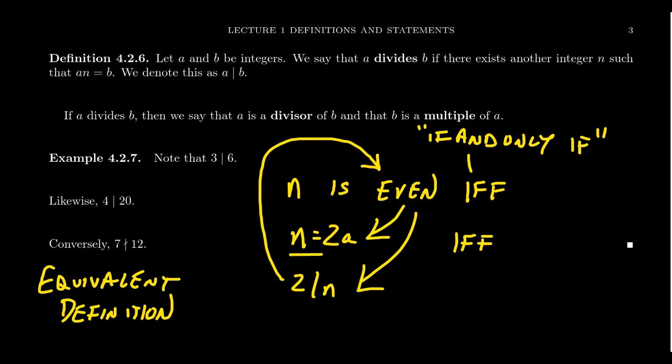This gives us an example of what we call an equivalent definition — you could define the same concept in two different ways, and even though the definitions look different, everything that's true about one is true about the other. These two definitions of a number being even are equivalent. When one has an equivalent definition, it doesn't matter which you use — the choice is a convention made by the mathematical communicator, often based on which is more convenient or logically closer to the topic at hand.